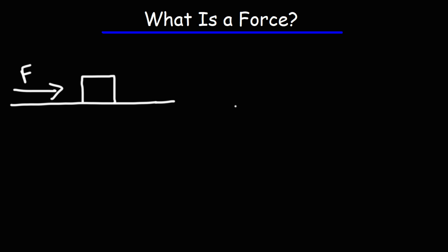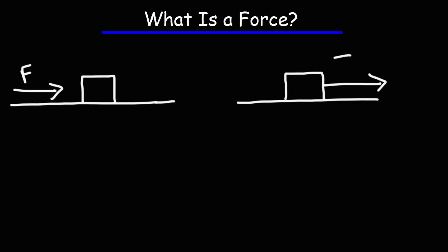Another way in which you could apply a force on this block is through a pull action. Let's say if you attach it to a rope and you pull it to the right. This type of force is known as a tension force. Any force acting through a rope is a tension force. But that's the basic idea behind a force — it's a push or a pull action.